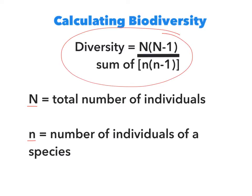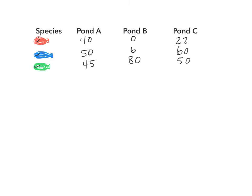So let's do an example to figure out how you can use this equation to calculate biodiversity. I'm a researcher and I'm in three different ponds tracking three different species of fish. Redfish, bluefish, greenfish, and they are very happy fish. So in pond A, where we're going to focus for our sample problem here, I have 40 redfish, 50 bluefish, and 45 greenfish. And I want to calculate the biodiversity of pond A.